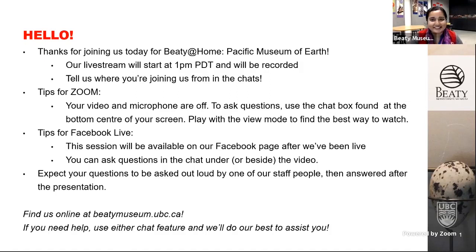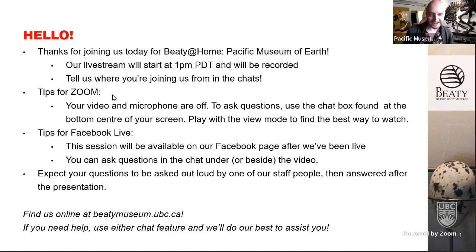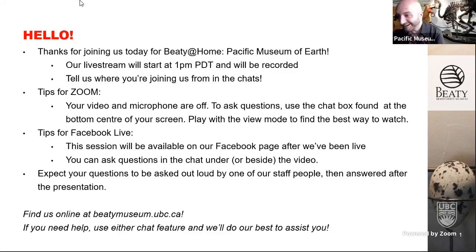We'll be using the chat box for questions and comments. Daniel, we've already got a question: how many types of rocks are there? There are three main categories — igneous, metamorphic, and sedimentary rocks. But if you're talking about individual species of rocks, it really depends on which geologist you're talking to. Just like biology, there are sometimes debates about whether to include two types under the same umbrella or split them up.